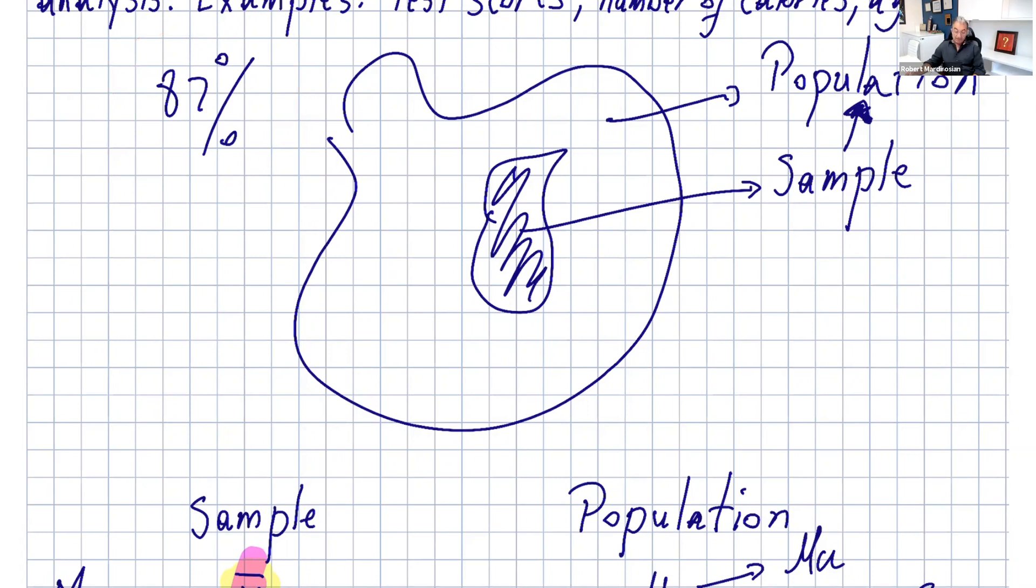When we hear information like this, we wonder where they got that information. The way they get that, they survey a sample, get information from the sample, and make conclusions about the population. Why they can't ask the entire population, sometimes the population involves millions of people, and surveying all of them takes a lot of time and money.